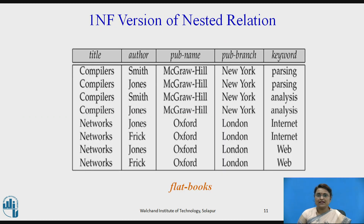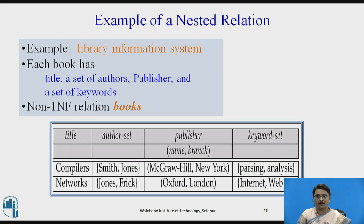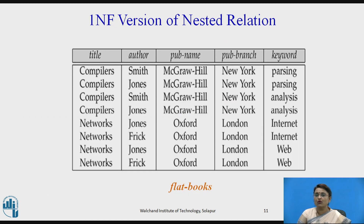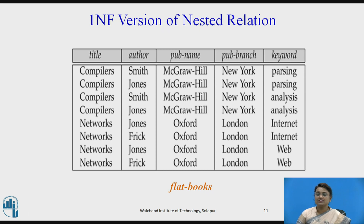The 1NF version of the nested relation — called flat books — is designed by expanding each multi-valued attribute into separate rows. For the compilers book, each author gets its own row with the publisher name, branch, and keyword. This results in many more tuples. The non-1NF version has a simpler relation structure with complex types, whereas the 1NF version is fully flat.